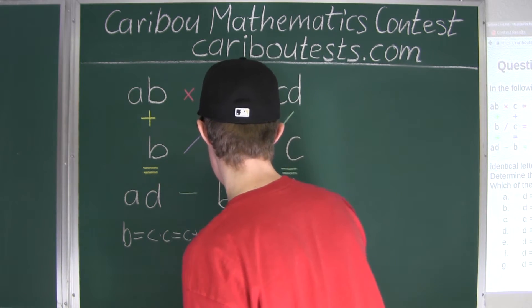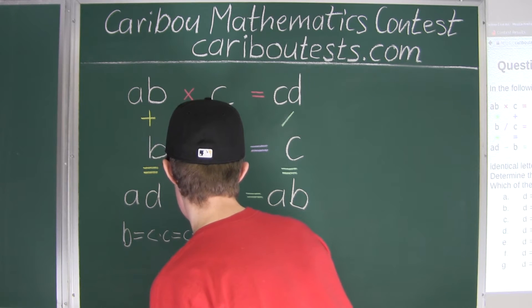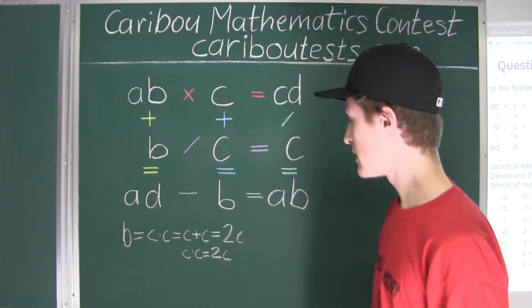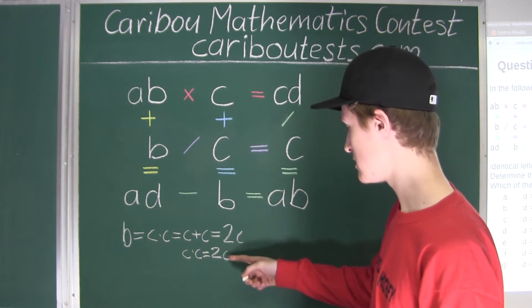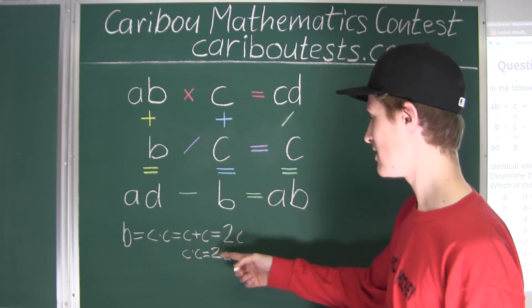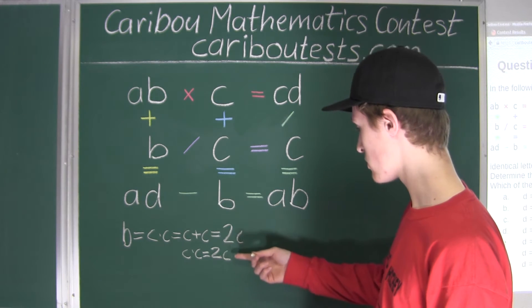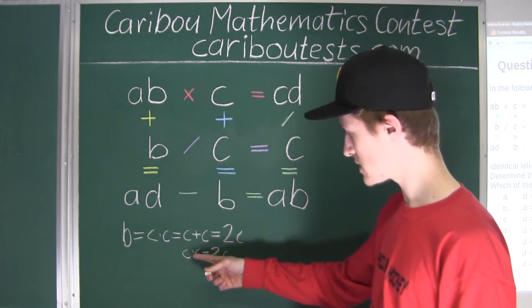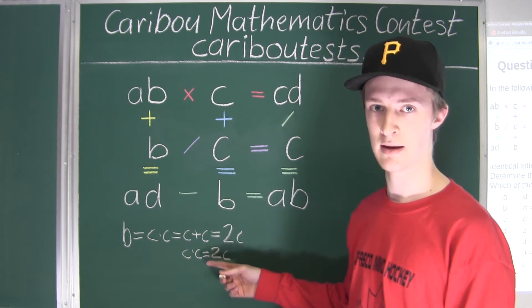And we can just write C plus C as 2C. Okay, so we have C times C is equal to 2C. Alright, now we have a factor of C on either side, on the left side and the right side. So of course, C could have a value of 0, because then the left side would be 0, and the right side would also be 0.